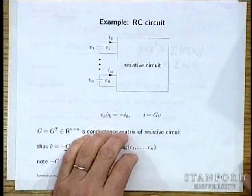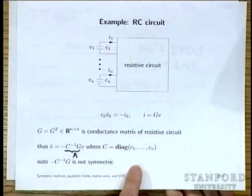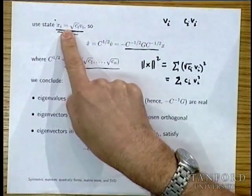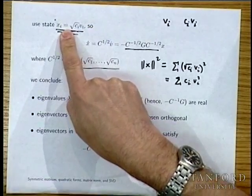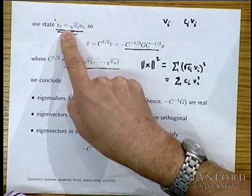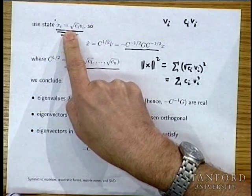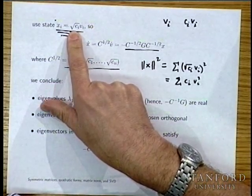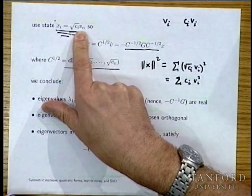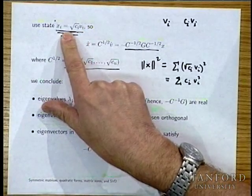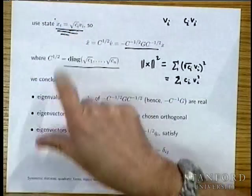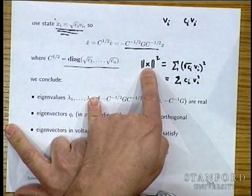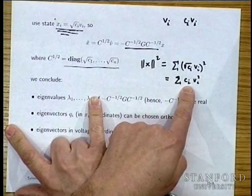Last time we looked at an RC circuit as an example. If we chose the coordinates in this really weird way — it has strange units, square root of farads times volts — but these units are actually natural because a norm squared is electrostatic stored energy.